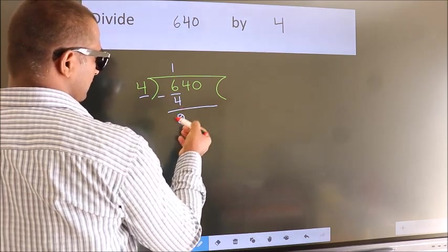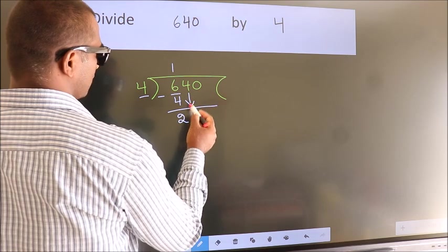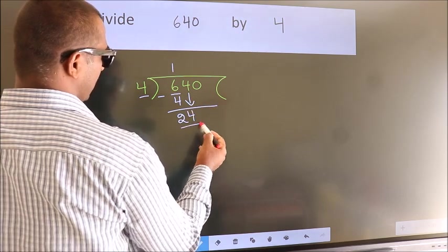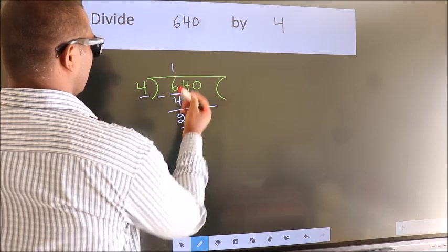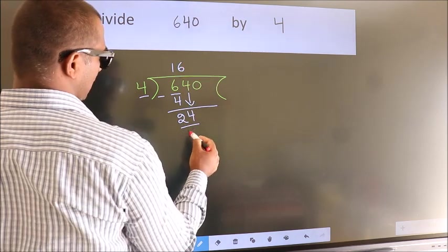After this, bring down the next number, so 4 down, so 24. When do we get 24? In the 4 table, 4 times 6 is 24.